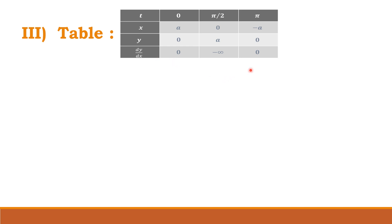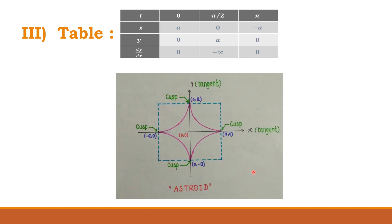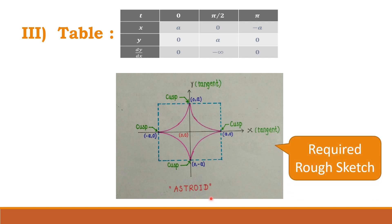Whenever dy/dx is 0, the tangent is parallel to the x-axis. Whenever dy/dx is infinity or minus infinity, the tangent is parallel to the y-axis. Using these characteristics, the rough sketch of the curve is obtained, which is known as the asteroid and has 4 branches.